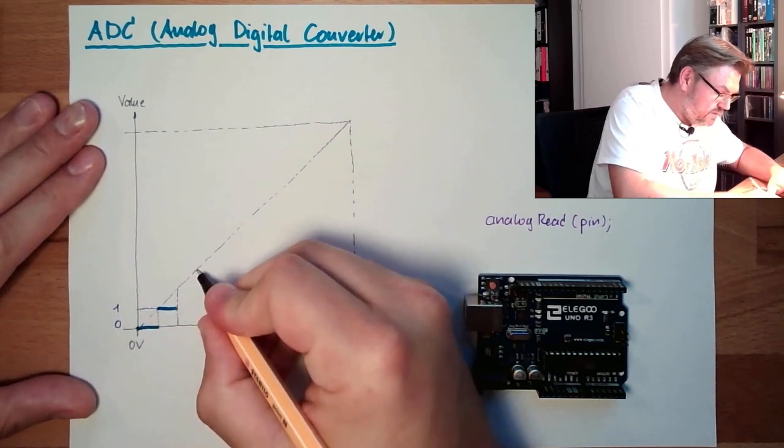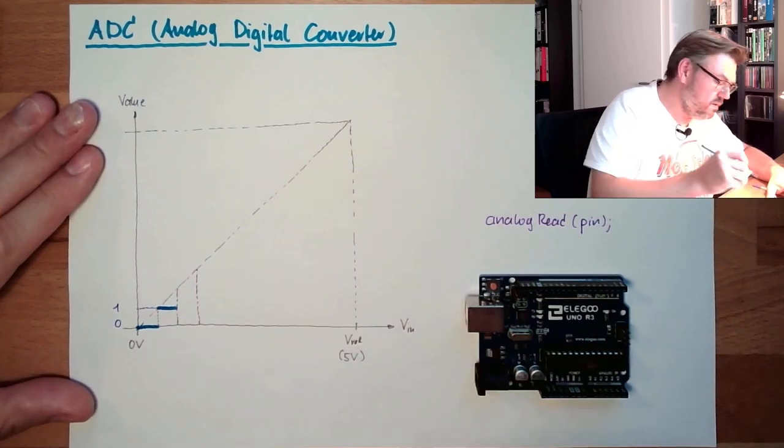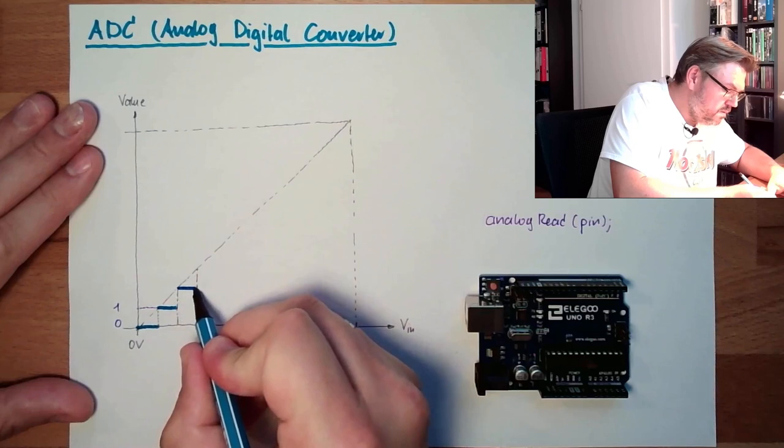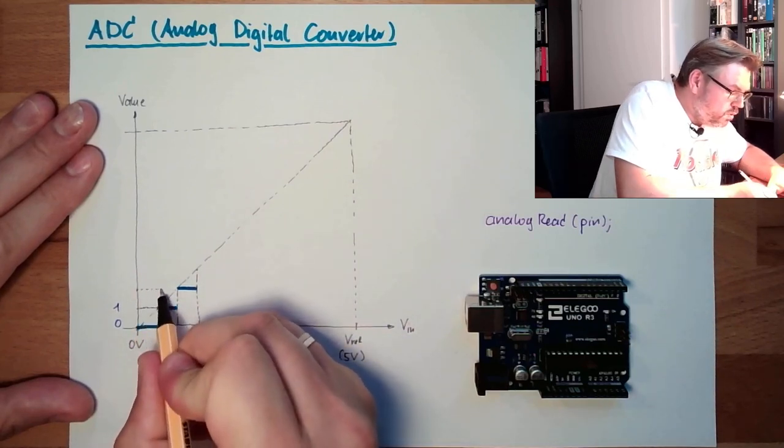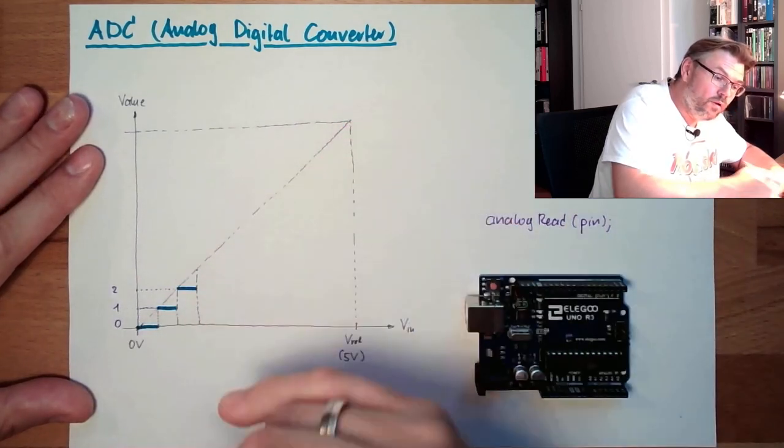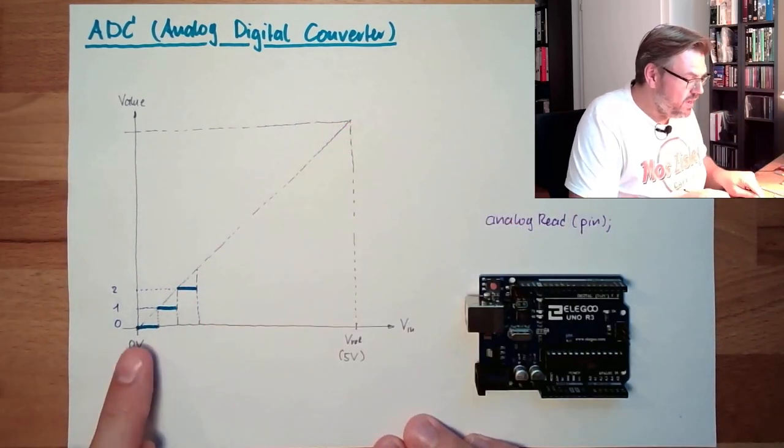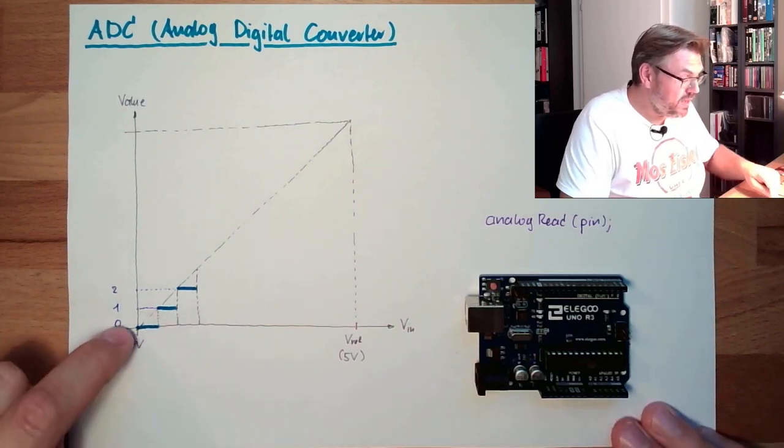And the next class, same size again, would be then value number 2, and so on. So every new class the input voltage is in, we get a higher number.